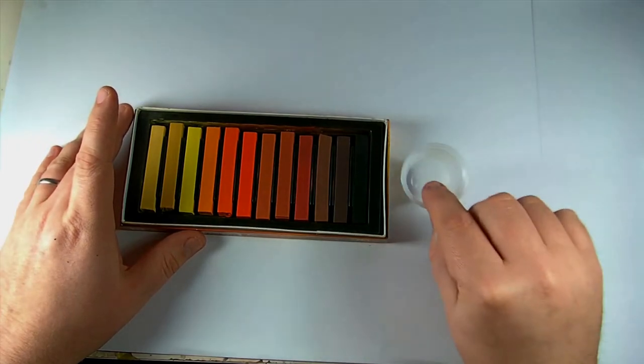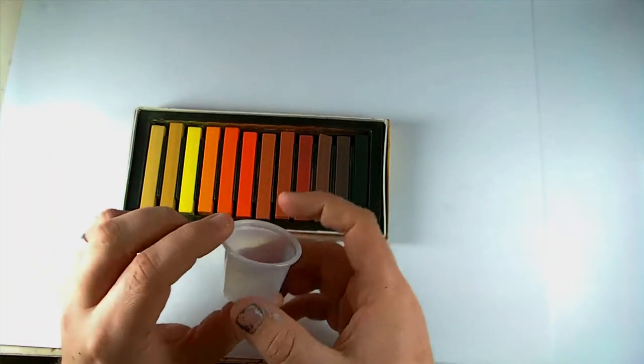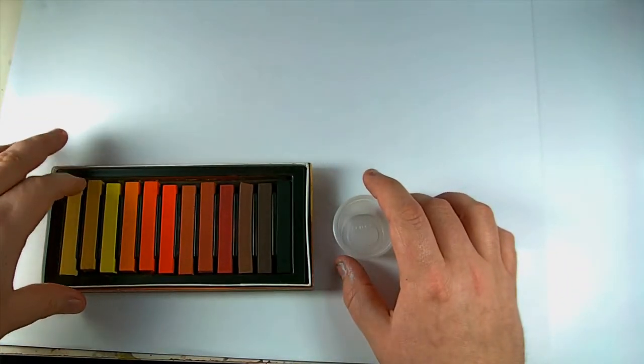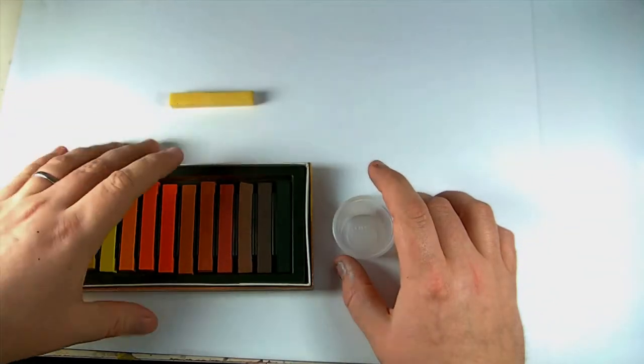So basically, what I do is I've got one of these little pots. Let's move these out of the way. Say we use the desert coil, because that will probably show up the best.